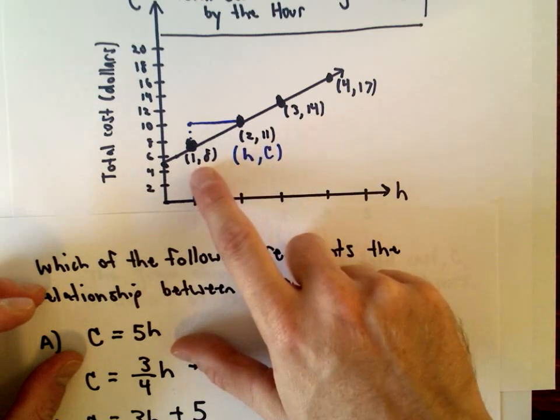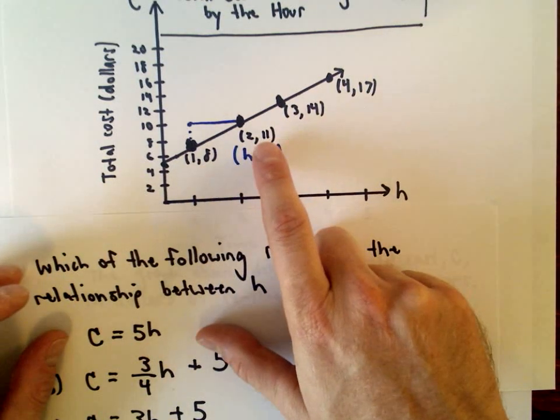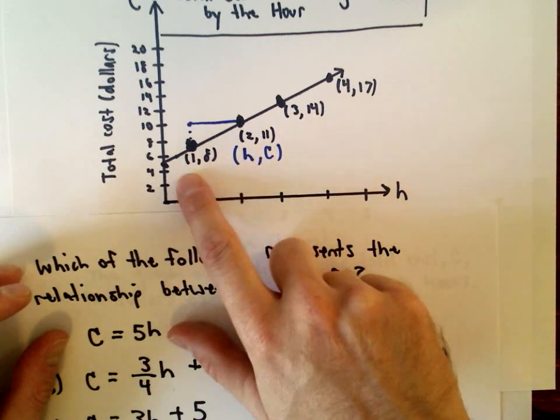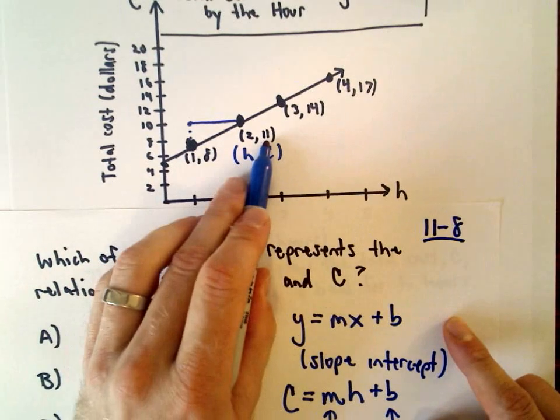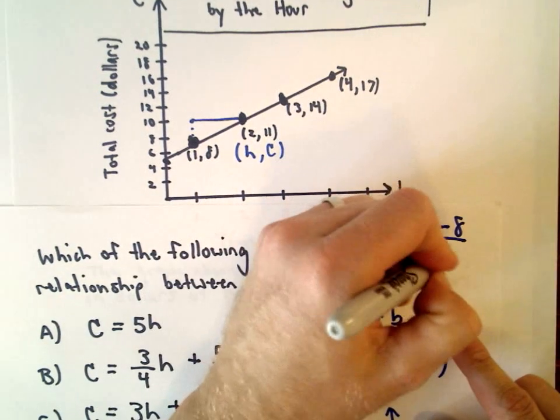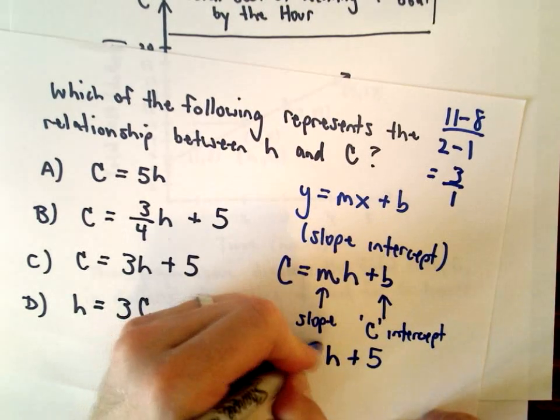Again my scale is definitely off here, but you could do slope change in y over change in x, or in this case it would be change in C over change in H. You do the difference of the second coordinates over the difference of the first coordinates. So you would have 11 minus 8 over 2 minus 1. That's going to give you 3 over 1 or 3, so that's going to be the slope.